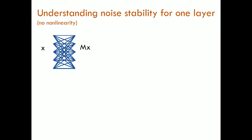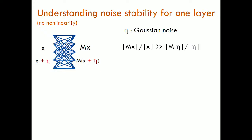Let's understand noise stability for a single layer with no non-linearity — it's just a matrix mapping x to Mx. If you add Gaussian noise to x at the previous layer, you get M(x + η) = Mx + Mη because it's a linear operator. Noise stability for one layer means the matrix passes the data x much better than it passes the noise: the ratio |Mx|/|x| is much more than |Mη|/|η|. On the left-hand side is the largest singular value of the matrix; on the right-hand side is how well it transmits noise, which is something like the L2 norm of the singular values scaled by √n.